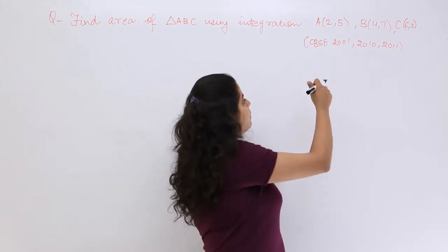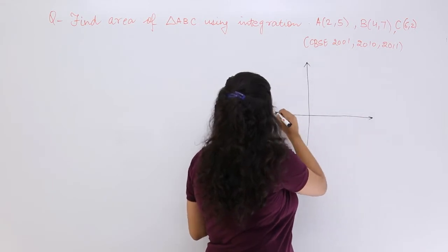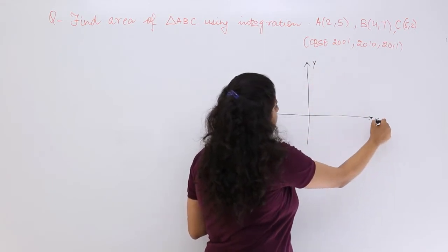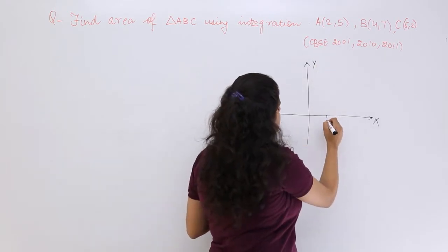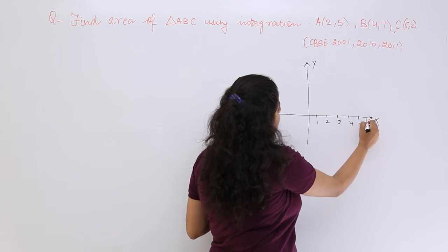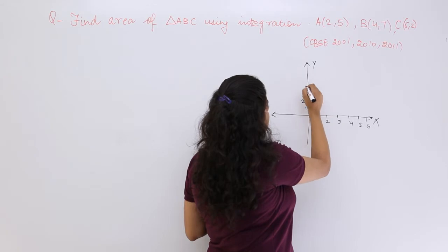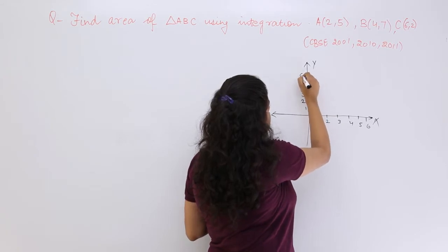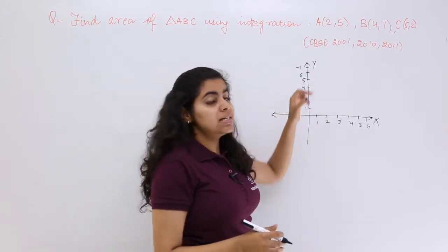What I will be doing is I will be actually trying to plot on the coordinate axis these three points. So this is the y-axis, this is the x-axis. I have A is (2,5). Say this is 2, this is 1, this is 3, 4, 5, 6 and this is 1, 2, 3, 4, 5, 6, 7.